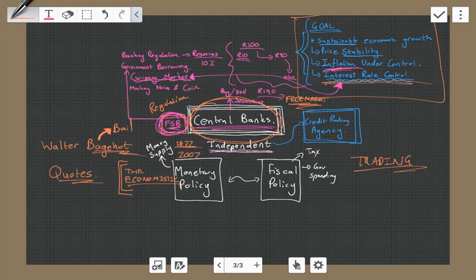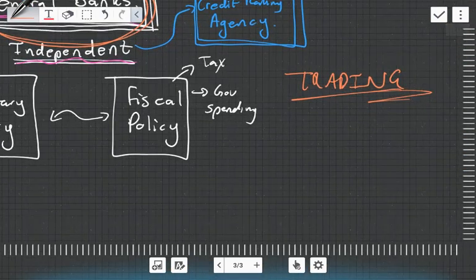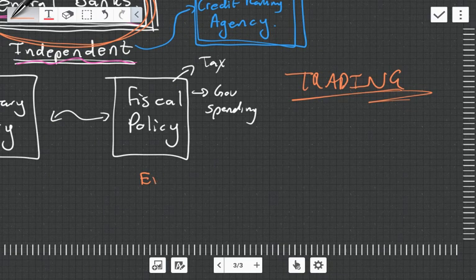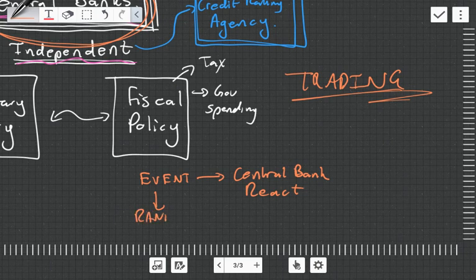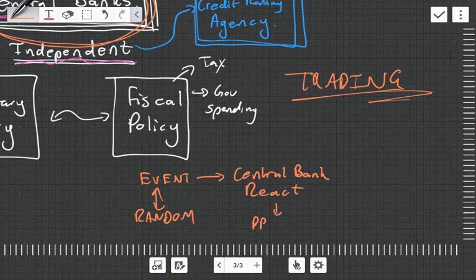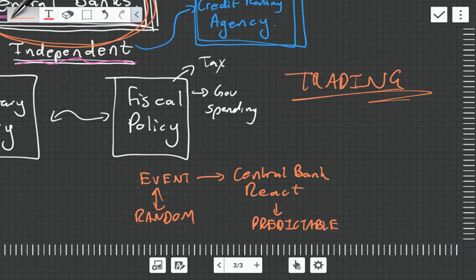So an event happens. You can think, how will the central bank react to this? Okay, so a random event happens. This event is random. The central bank reacts, but they will be in a very predictable way, because remember, they've stated what their aim is, and that is to keep prices stable.